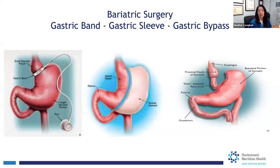This accomplishes two things: restriction because there's a small stomach, and malabsorption. This whole length of small intestine going down until what we call the biliary limb connects means the calories aren't absorbed as well. These patients tend to lose weight even quicker, on average about 150 pounds in the first year.